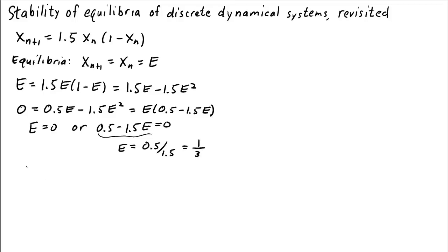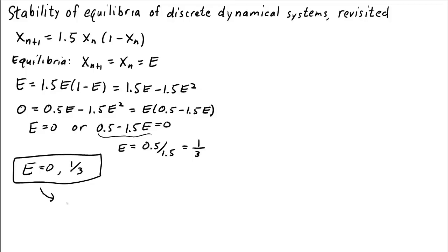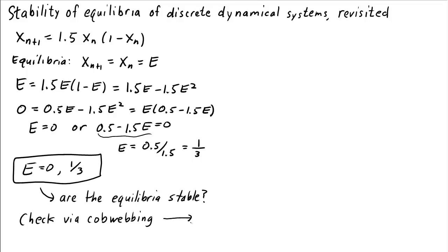So the equilibria are e equals 0 and 1/3. The question is: are these equilibria stable? Let's check via cobwebbing and see if we can recall a relationship between stability and the tangent line.